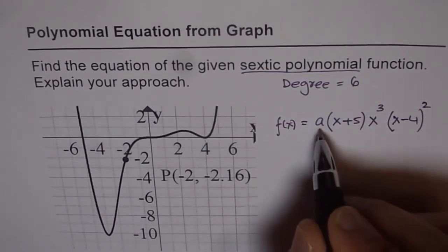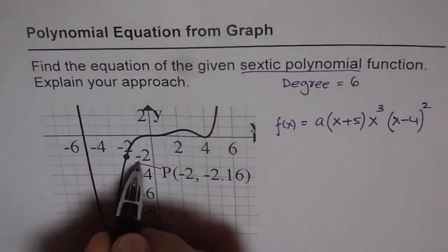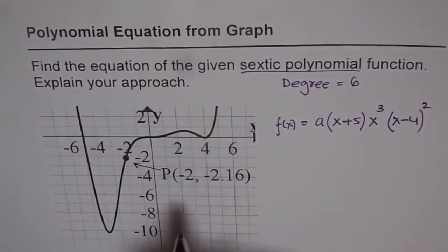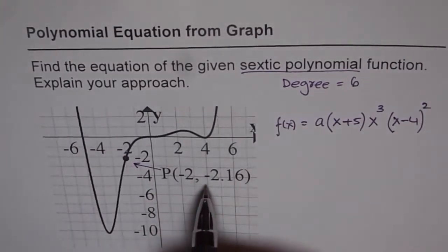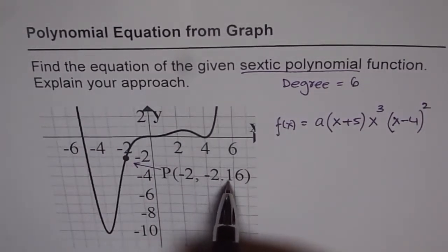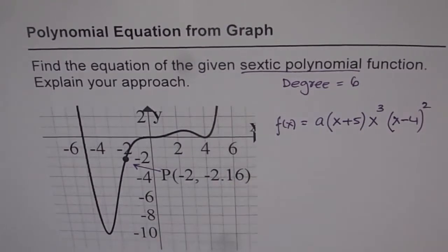Now to find the value of a we need a point on the curve and we are given a point here. So this is the point which is given to us. At minus 2 the value of the function is minus 2.16. Let us substitute this value.